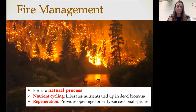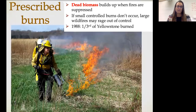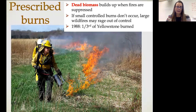It used to be that our approach to fire management on public land was to prevent and suppress all wildfires as quickly as possible. What we have learned in the last 40 to 50 years is that because fire is a natural process, we need to manage fire rather than suppress it. A big piece of the Forest Service toolkit is prescribed burns — small, controlled burns so that there is less dead biomass to fuel large wildfires. This changed dramatically after the fires in 1988 that burned over a third of Yellowstone National Park.